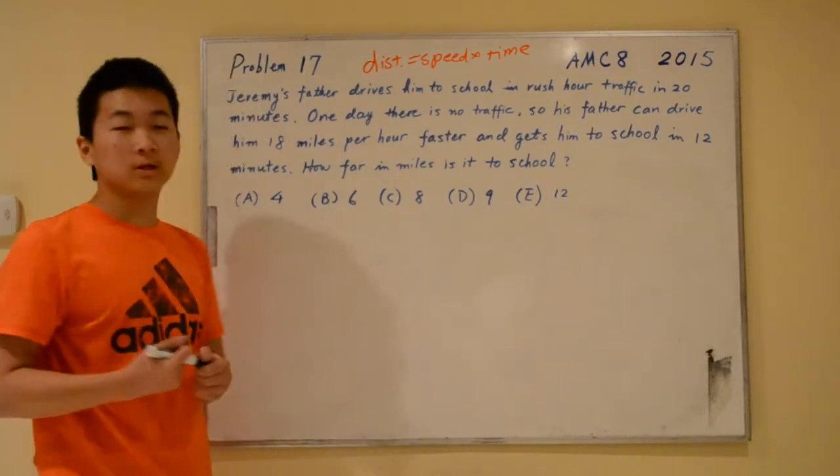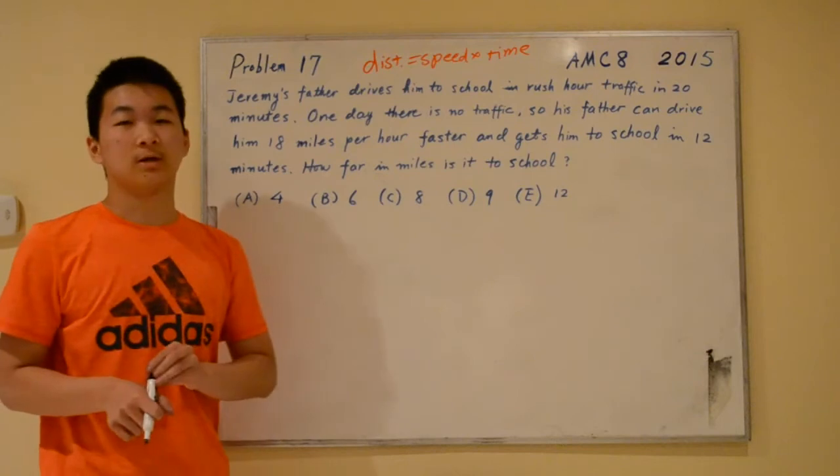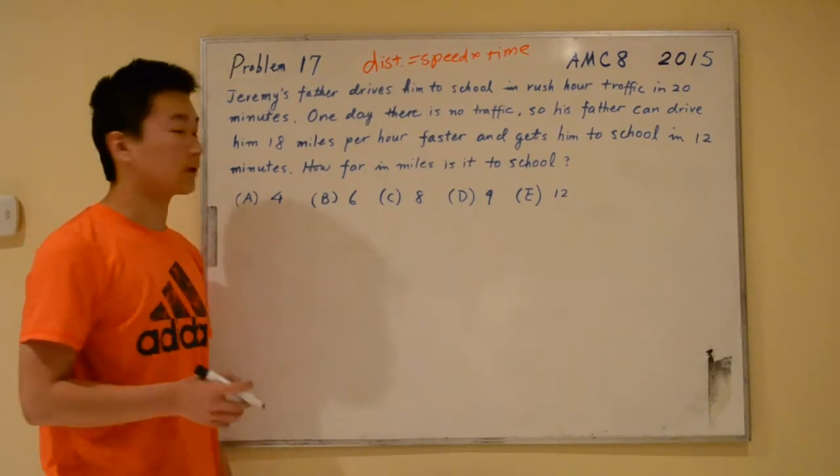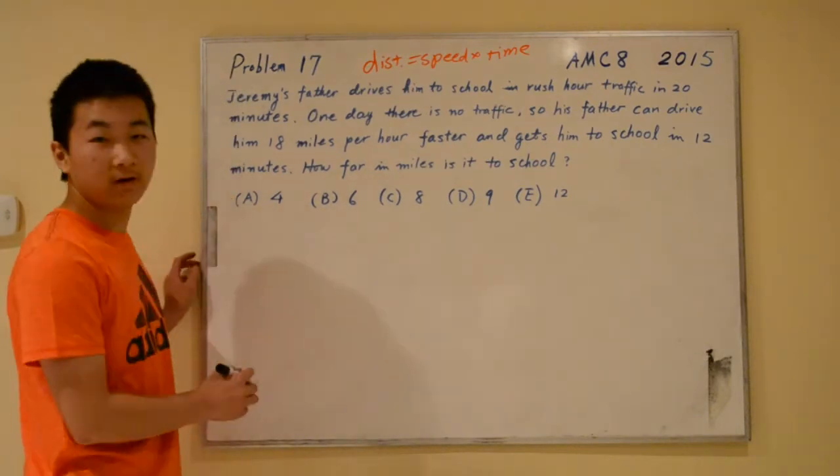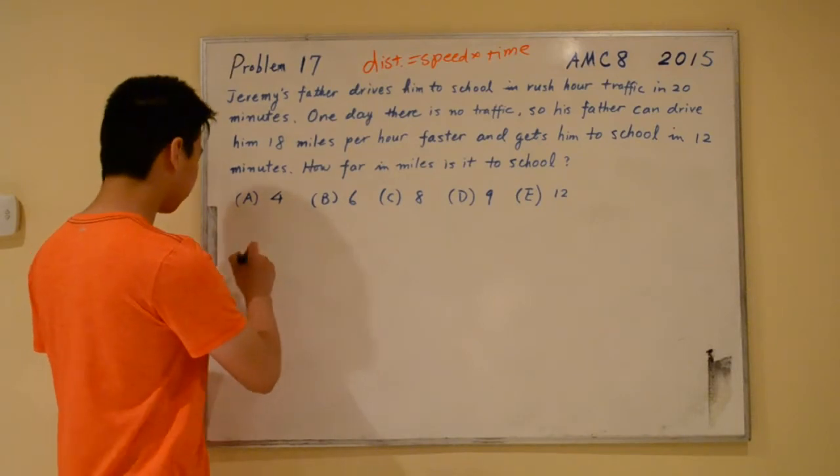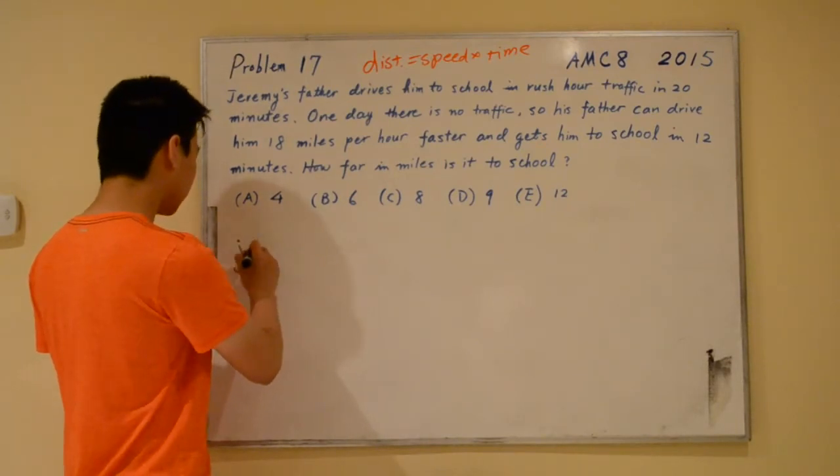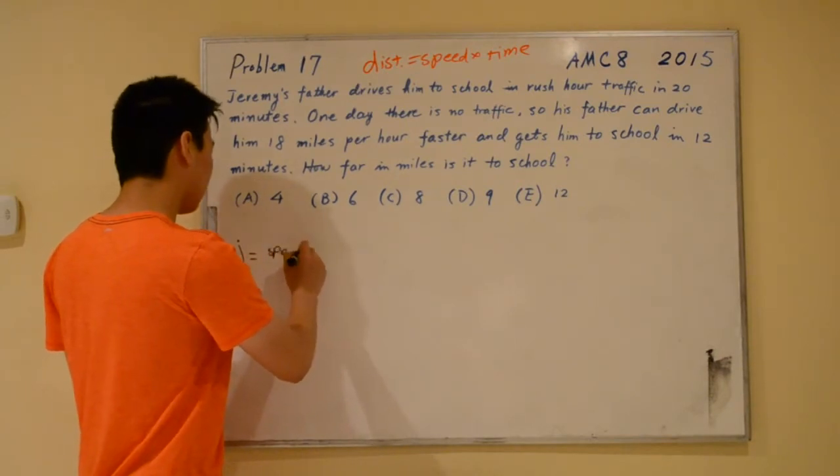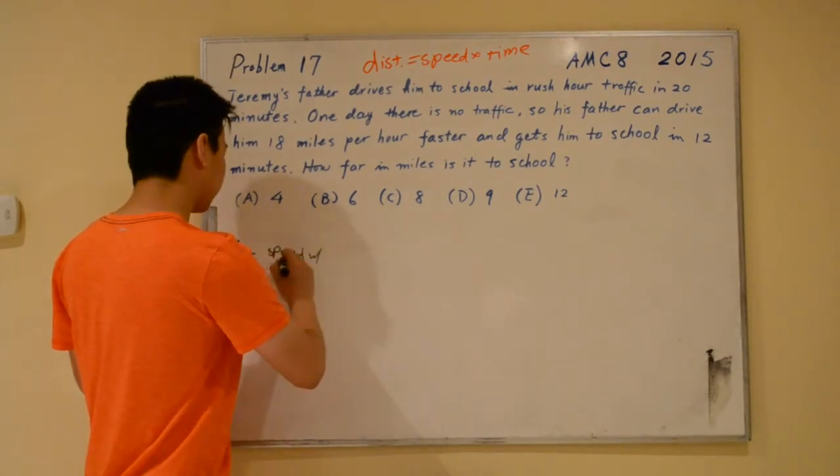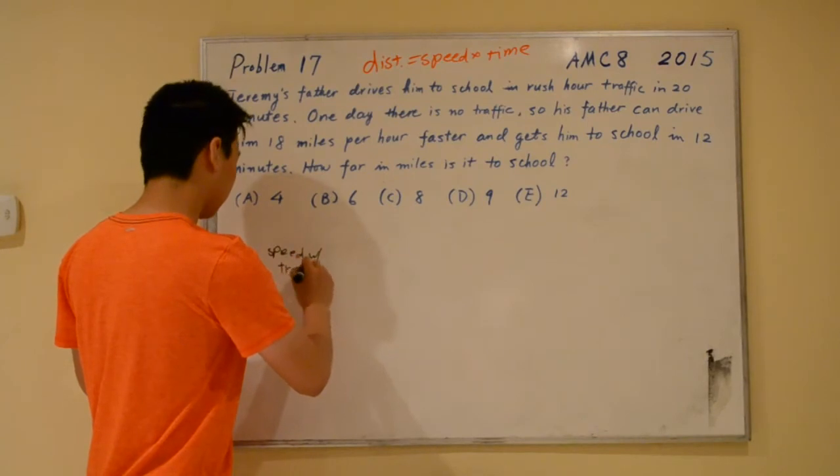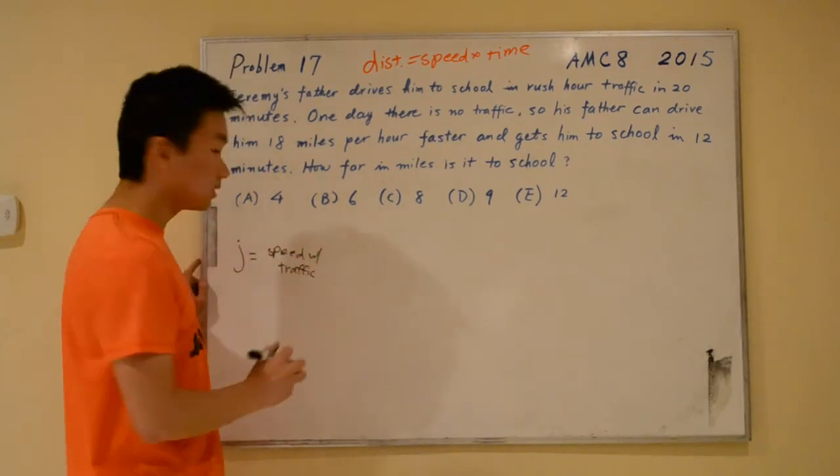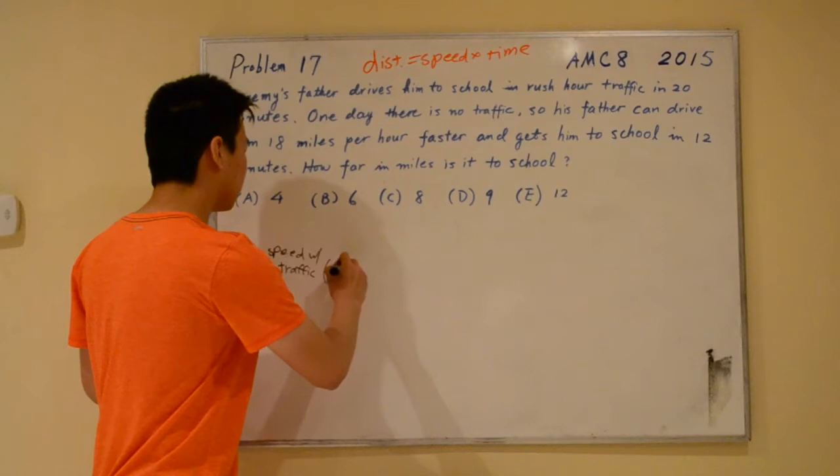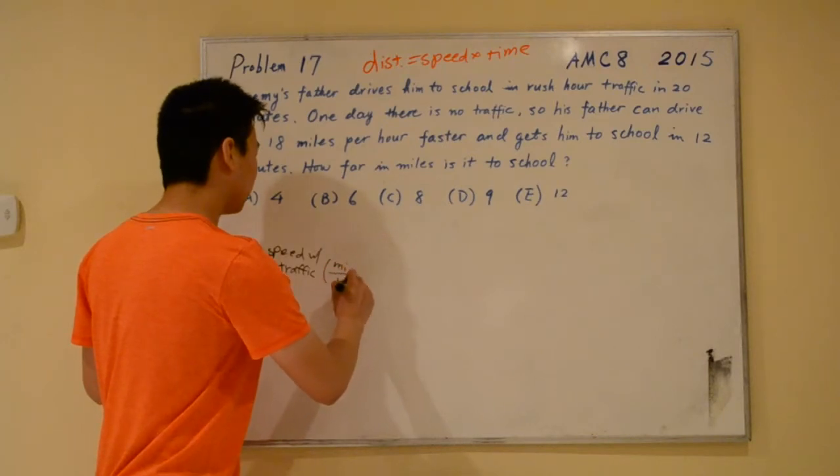Now let's create a variable representing the speed during traffic. Let's call that variable j. So j is the speed with traffic, and this is in units of miles per hour.